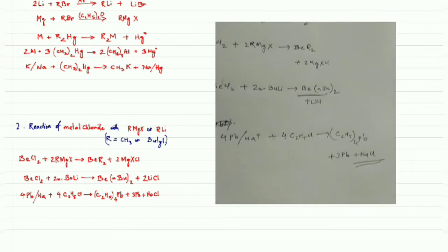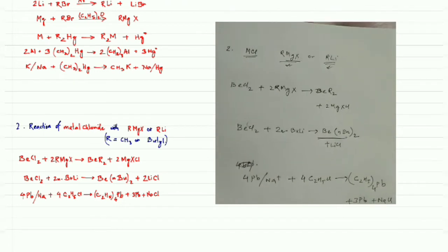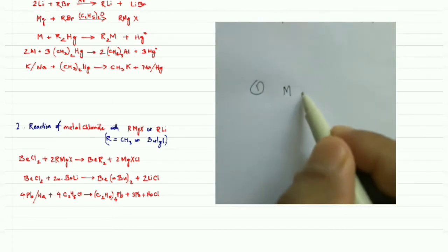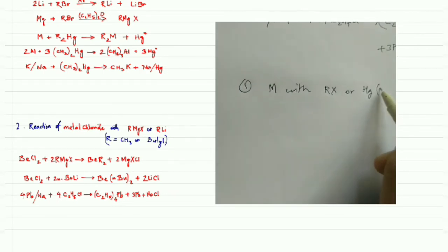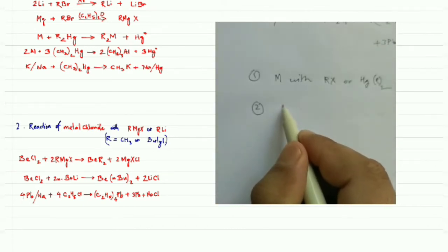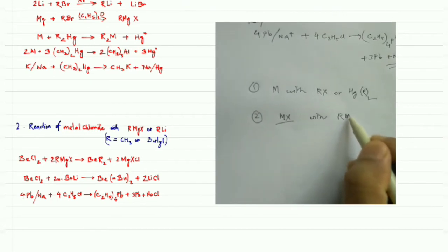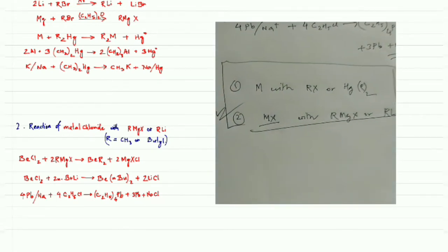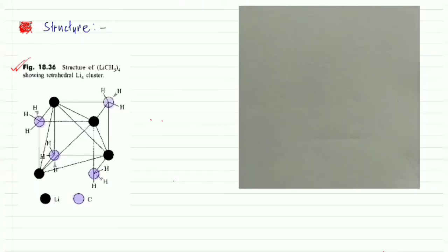These are examples of the preparation of organometallic compounds. To summarize: the first method is the reaction of a metal with an alkyl halide or dialkyl mercury, and the second method is the reaction of a metal halide with RMgX or RLi. These two are the main methods for preparing organometallic compounds of main group elements.